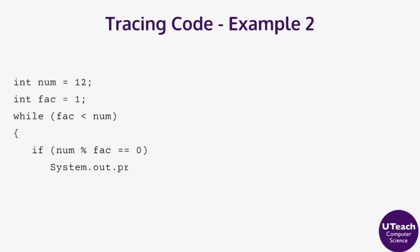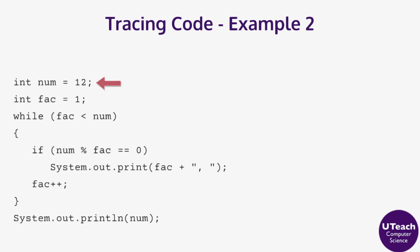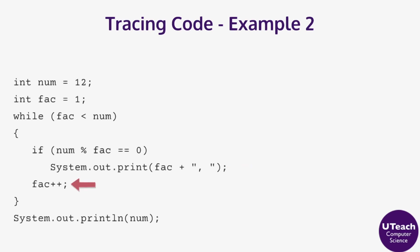Let's trace another code block that uses a while loop. Num is initialized to 12, fact is initialized to 1. The conditional for the while loop checks to see if fact is less than num. Inside the loop, another conditional checks to see if num mod fact is equal to 0, meaning that fact is a factor of num and divides into num evenly. If the conditional is true, then the value of fact is displayed with a comma and a space. Notice the use of print instead of print line, so there is no new line before the next item prints. Outside of the conditional, fact is incremented by 1. After the loop, the value of num is displayed.